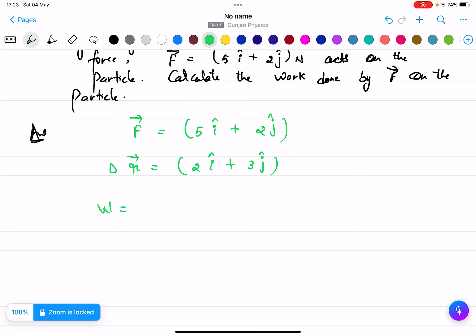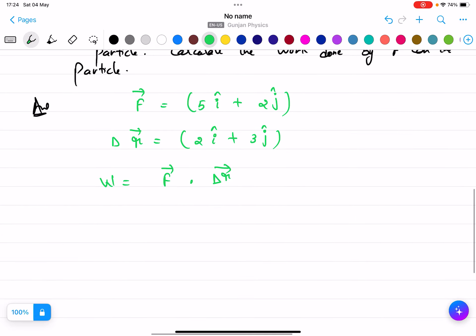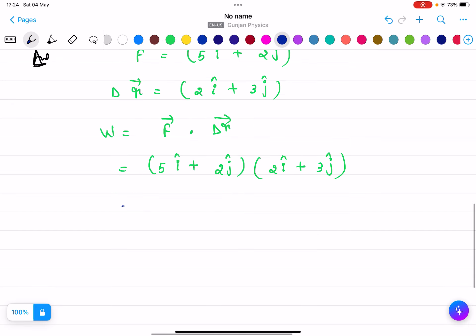Work done means force into displacement. So we will multiply these two vectors: 5i plus 2j and 2i plus 3j. We will just multiply these two. 5i will multiply with this bracket and then 2j will multiply with 2i plus 3j.